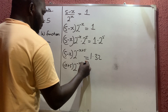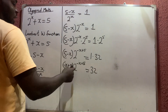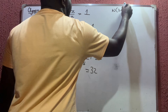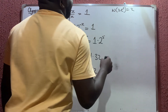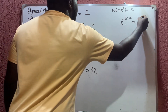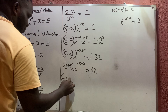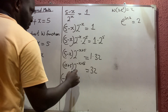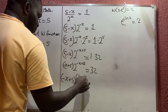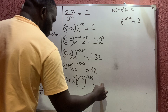Now I want to bring in the exponential form because the Lambert W function works with exponentials. You should agree that 2 equals e raised to the power of ln(2). So instead of writing 2, I can write it as e raised to the power of ln(2), so that 2 raised to the power of negative x plus 5 becomes e raised to the power of ln(2) times (negative x plus 5), which equals 32.